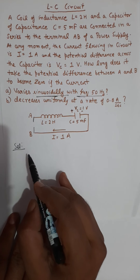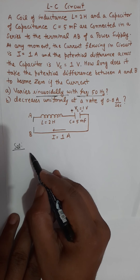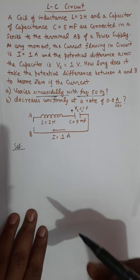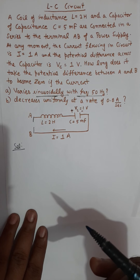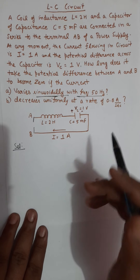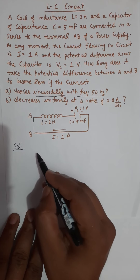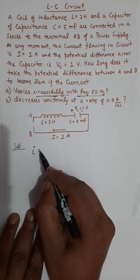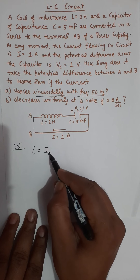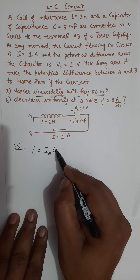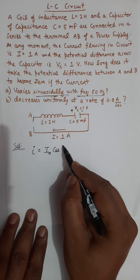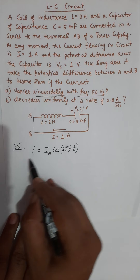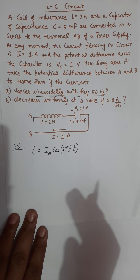Because it is an alternating circuit, the current must be oscillating and must vary with time with the same frequency of 50 Hertz.